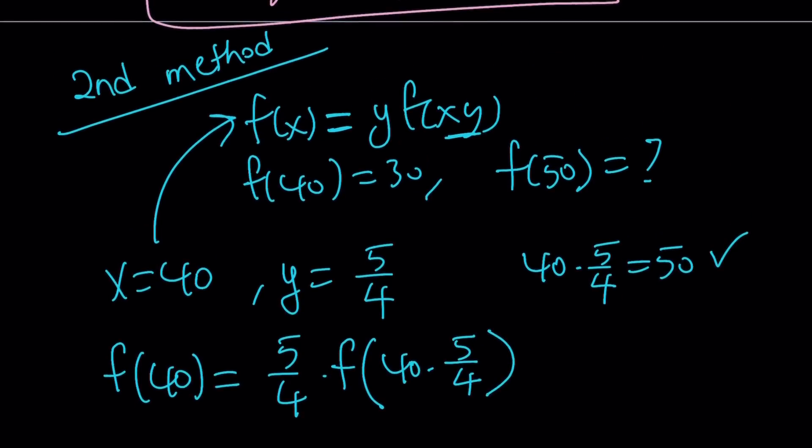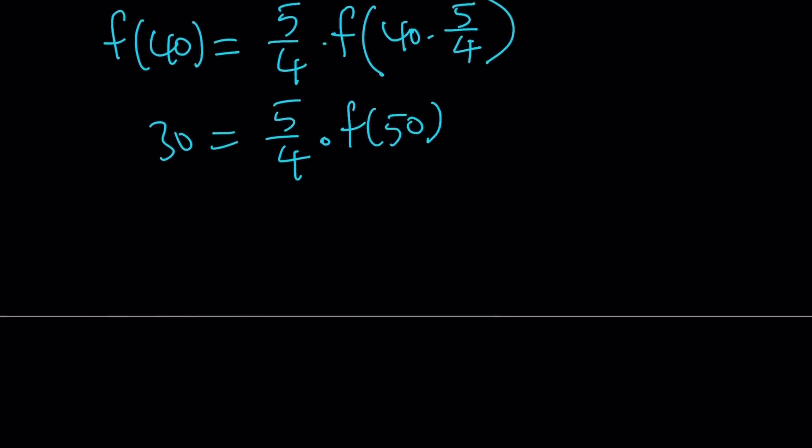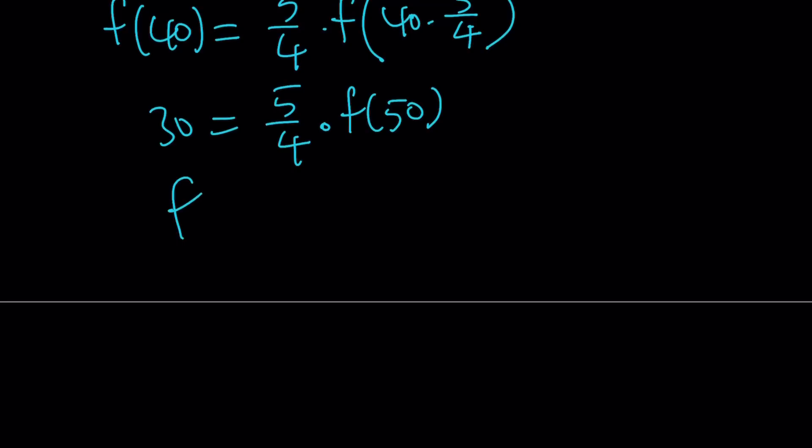And this gives us the answer. f(40) is 30. This is 5 fourths. And f(50) is what I'm trying to find. So I can find it from here by using the reciprocal or whatever, cross multiplication. Whatever you do, you'll get the answer. And it's going to be 24, as before.